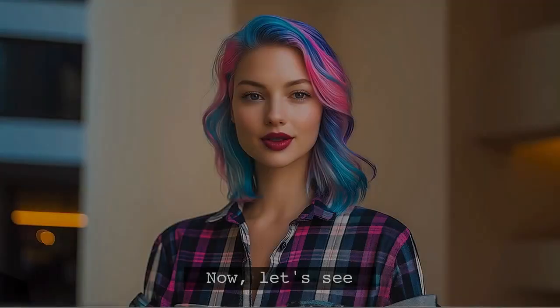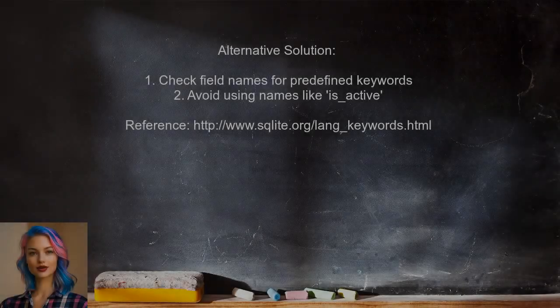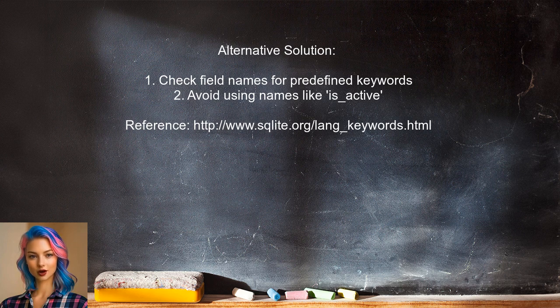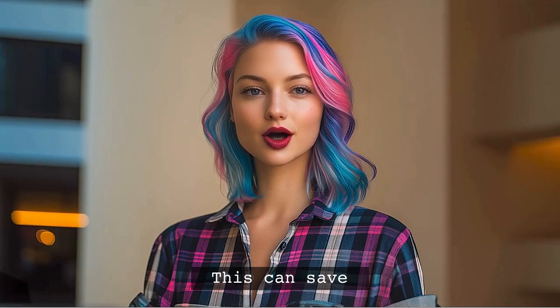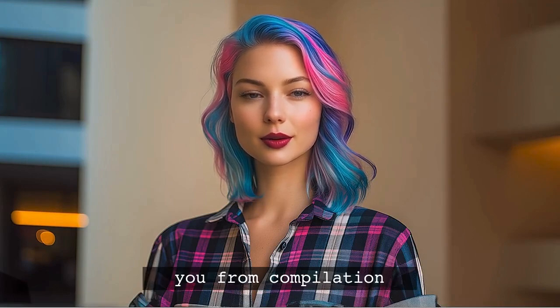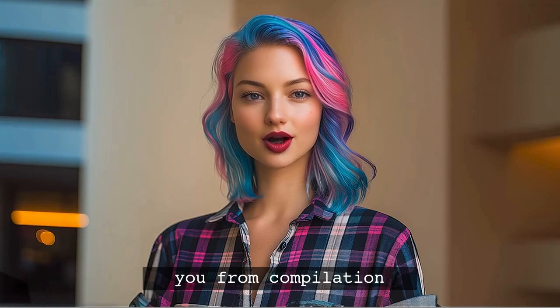Another user points out that the issue might be related to the naming of your fields. Specifically, if you use any predefined keywords, it can lead to the same error. For example, naming a column 'isActive' would cause problems. Always ensure your data classes are structured with Room's requirements in mind — this can save you from a lot of compilation headaches down the line.